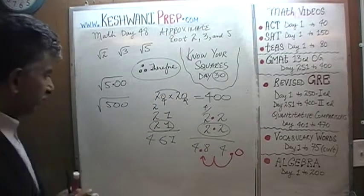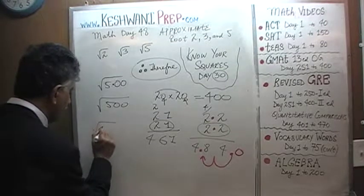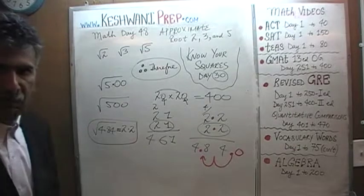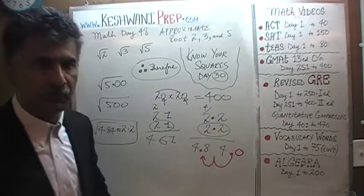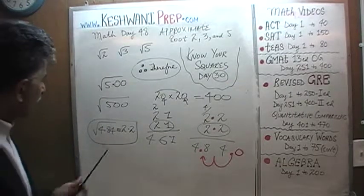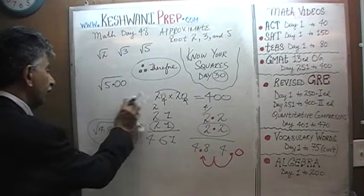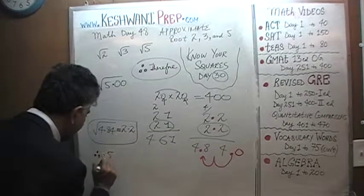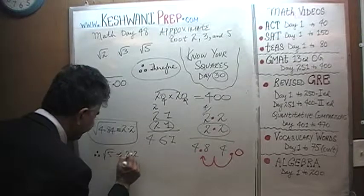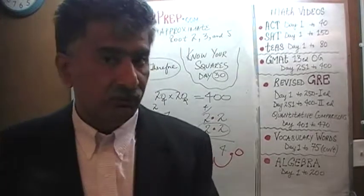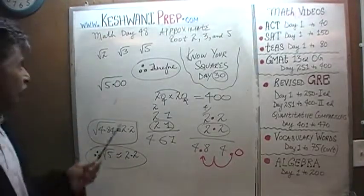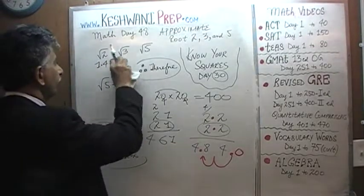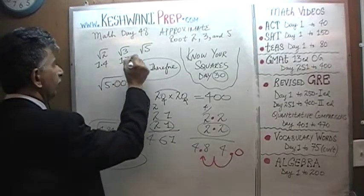So since 22 times 22 is 484, that tells us that 2.2 times 2.2 has to be, we have to move the decimal 2 places. Decimal is right here, move it 2 places, 1, 2, 4.84. So that tells us that square root of 4.84 is exactly 2.2. This is exactly 2.2. We don't want the square root of 4.84. We're not interested in knowing the square root of 4.84. We want to find out the square root of 5. Since the square root of 4.84 is exactly 2.2, therefore, it is quite reasonable to make an assertion that the square root of 5 would have to be approximately 2.2 because 5 is very close to 4.84.